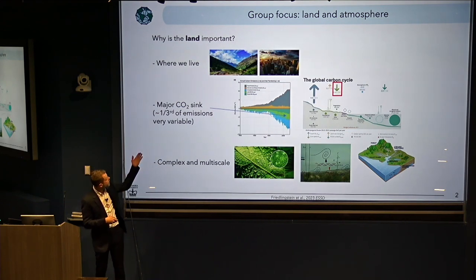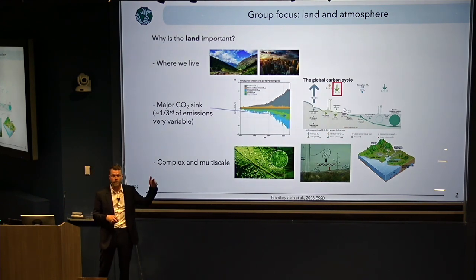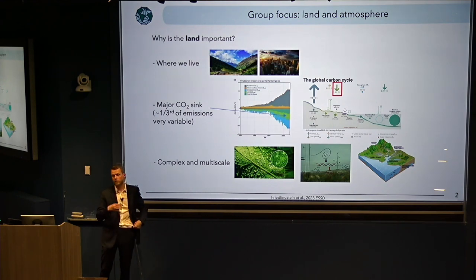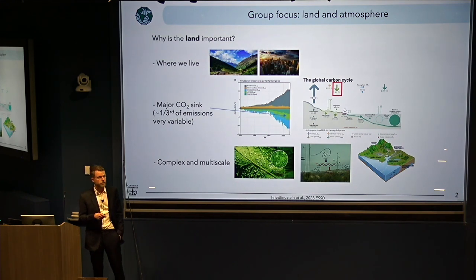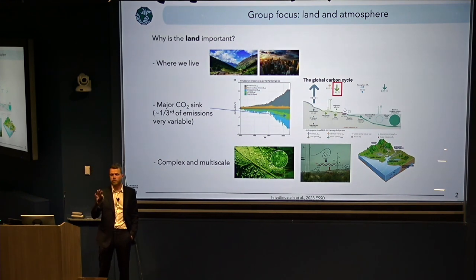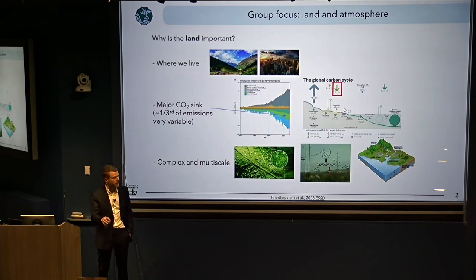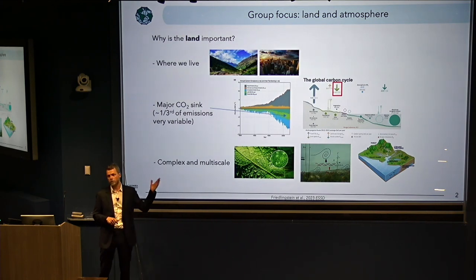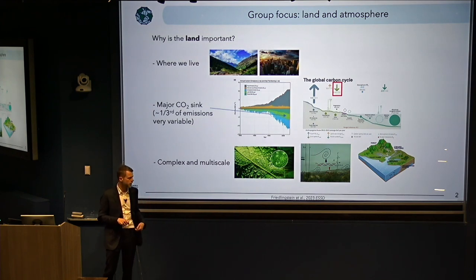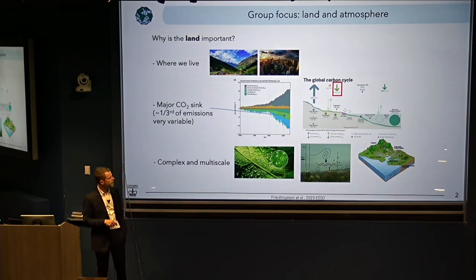So why is the land interesting? First off, that's where we live. There are multiple complexities, whether on the natural system or the urban system. It's also a major carbon dioxide sink — roughly these days about 29 to 31 percent of anthropogenic emissions are being taken back by the land surface. So it's a major sink which is really crucial to mitigate some of climate change, and something we really need to keep track of and understand whether that will still be continuing moving into the future.